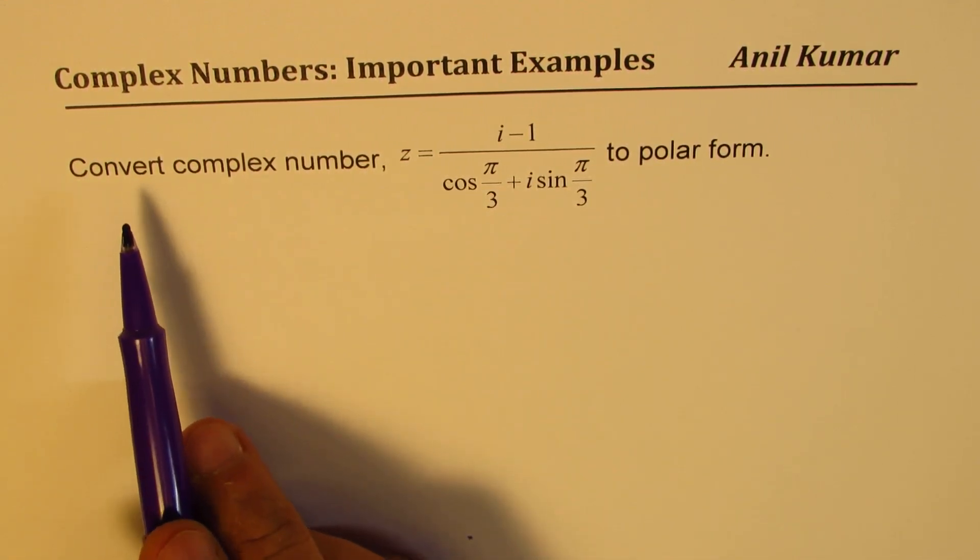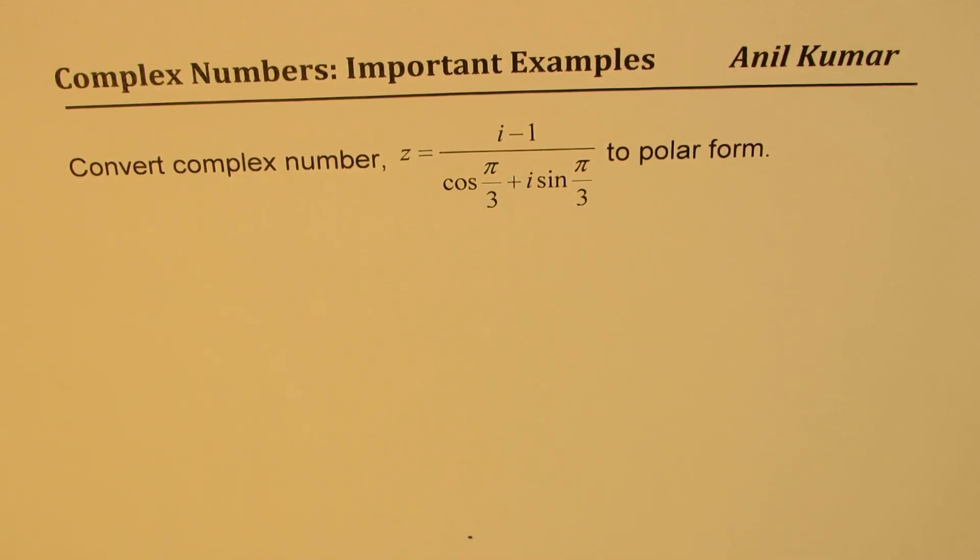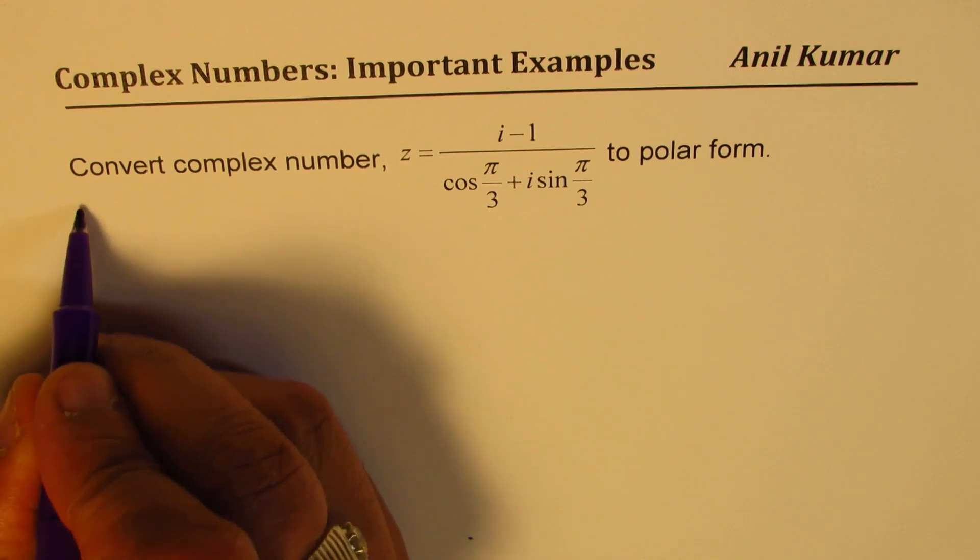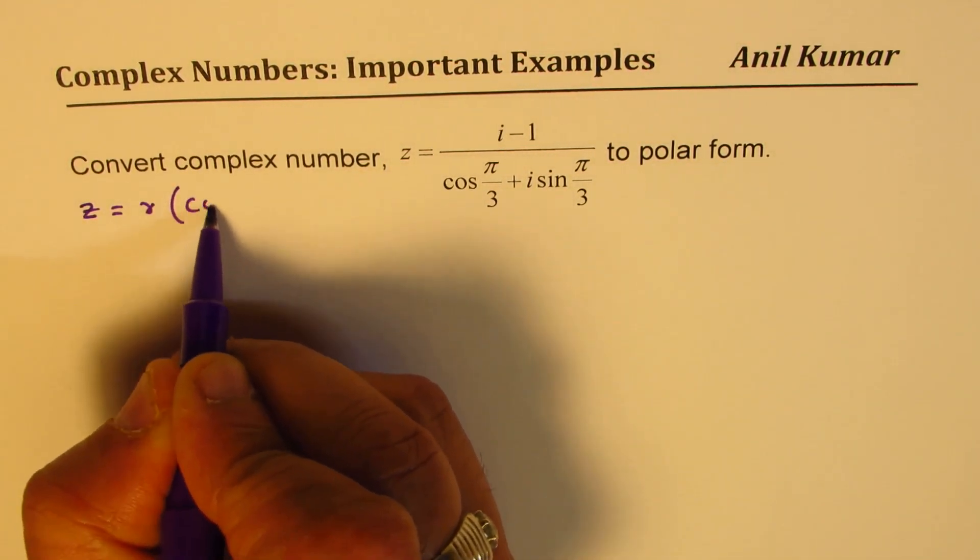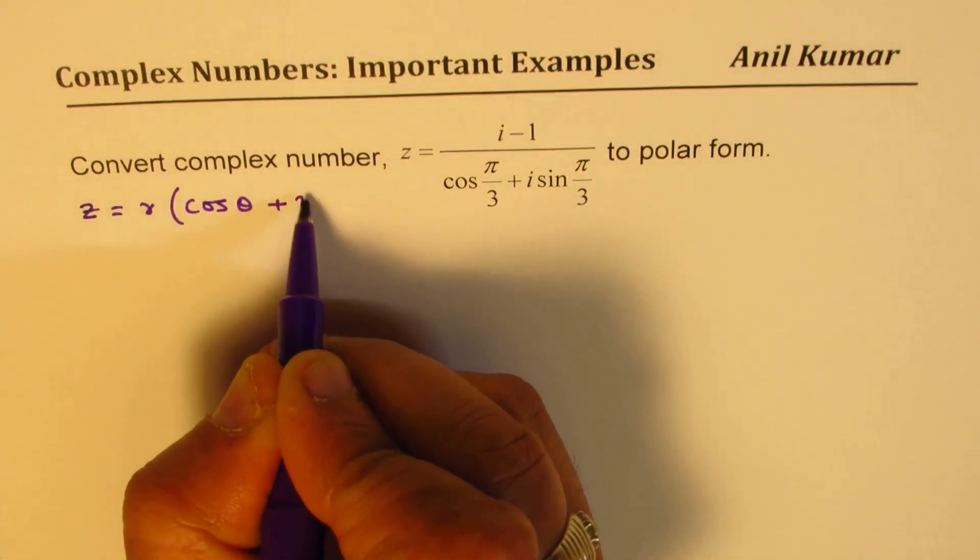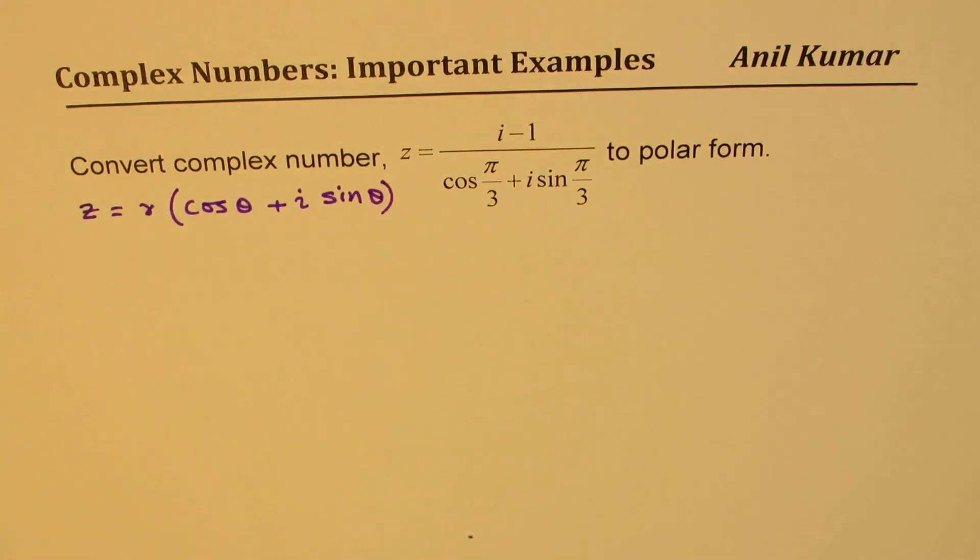We need to convert complex number z equals i minus 1 divided by cos π/3 plus i sin π/3 to polar form. You can always pause the video, answer the question and then look into my suggestions. Now when I say polar form, it means I want to write z equals r times cos θ plus i sin θ.